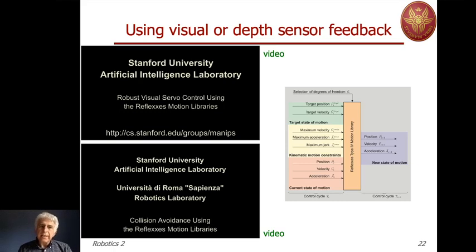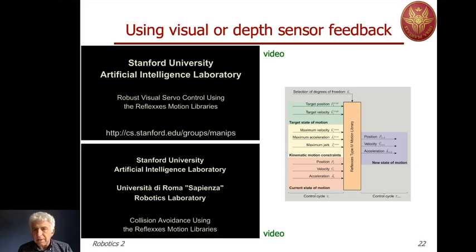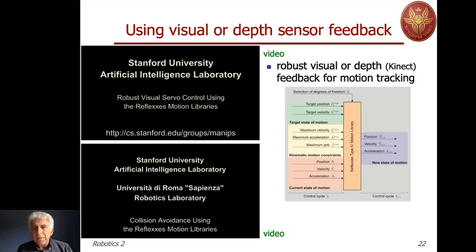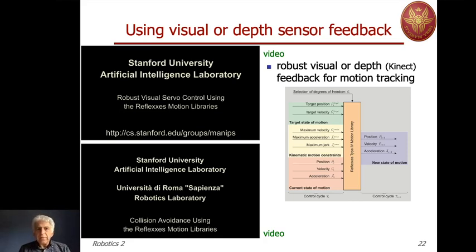This next example is a result of collaboration between Stanford University and our lab at Sapienza, started many years ago. In the first video, on top, we will see how the robot tracks motion in the Cartesian space driven in the first case by a stereo camera and in the second case by a depth sensor — actually a Kinect.